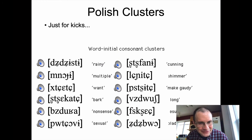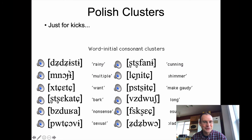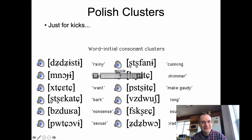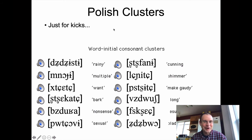Polish is just a fun language in general because it has lots of consonant clusters. I'll walk you through some fun Polish words we can try to say together — I'm not going to put these on the next production exercise, but don't tempt me. Just kidding. Here we go: the word for 'rainy' in Polish, 'dżdżysty'; 'multiple,' 'mnogi'; 'one,' 'kcieć'; 'bark,' 'szczekać.'